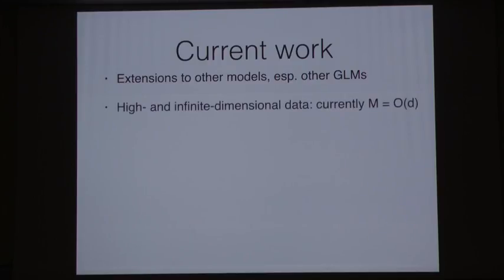But we have a number of exciting directions that we're working on that we think are really going to improve the performance of these coresets. So one is just to generalize them to other models, especially other GLM models, like Poisson regression or robust regression, which are used quite commonly in industry and other practical applications where they have large, really large datasets. So we think we can get similar results there. So as I just mentioned, we're struggling once we get to moderate to high dimension. So we have some exciting work where we're able to actually make the dependence on the coreset independent of the dimension of the data itself.